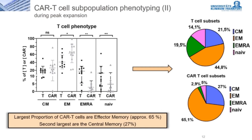Furthermore, we analyzed the subset of naive, effector, and central memory cells relative to CAR T-cells. The largest proportion are effector memory with a median proportion of 65%, and the second largest are central memory CAR T-cells with 27%. However, in this patient group, the majority underwent allogeneic stem cell transplantation before CAR T-cell administration, so the naive T cell pool is very limited due to ongoing T-cell regeneration. This picture would be fundamentally different when looking at patients without prior allogeneic stem cell transplantation.